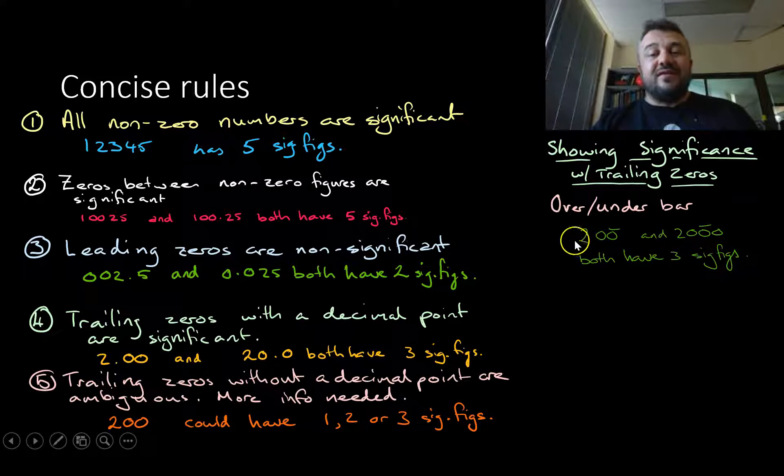Which means this 200 was, say just say it's 200 grams, it was measured up to the nearest whole gram. If this here is 2000 grams, this was measured to the nearest ten grams.